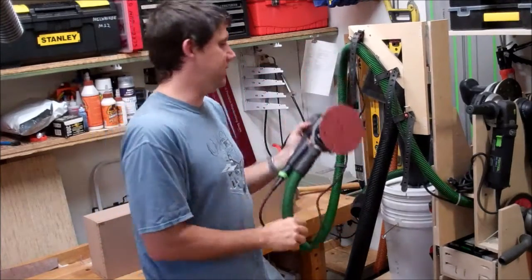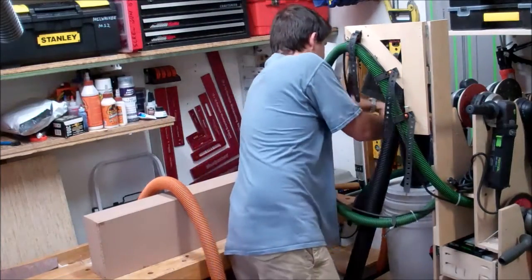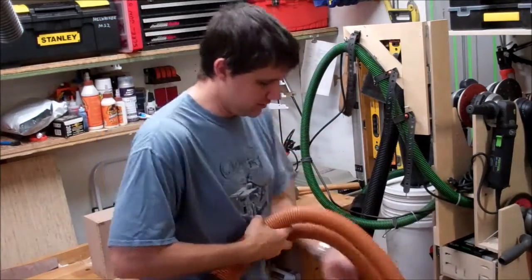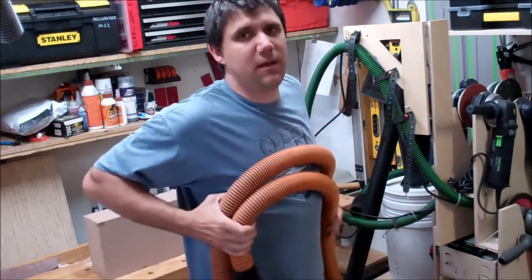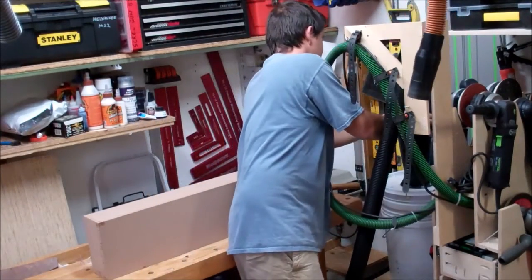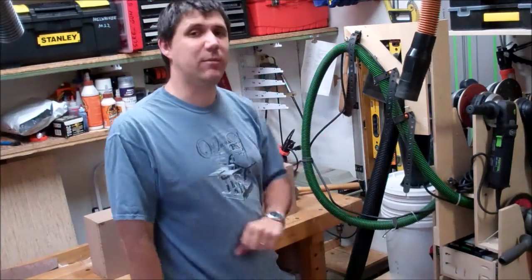But I don't have any suction because the hose isn't connected. So let's switch hoses again - remove the rigid hose, put it out of the way, reconnect the Festool hose, switch the vacuum into auto mode, and now I'm ready to sand.